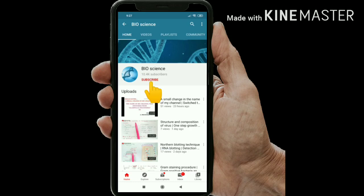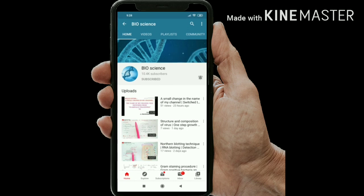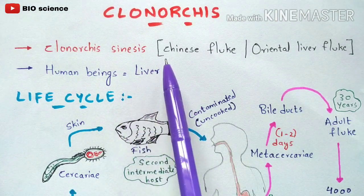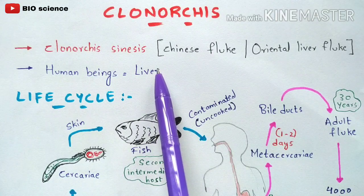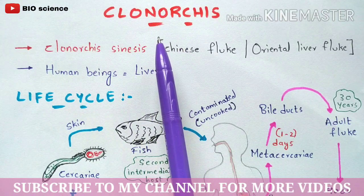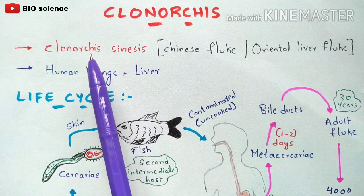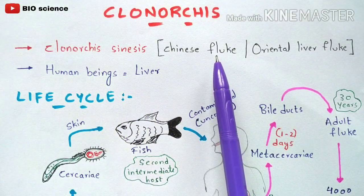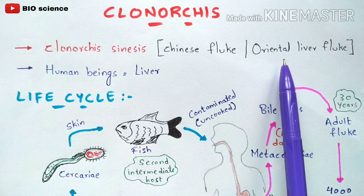Hello friends, if you like my videos subscribe to my channel and also press the bell icon for the latest updates. In this video we are going to discuss about Clonorchis — a parasitic disease. We will learn about Clonorchis, its cause, and the symptoms seen in an infected person. It is mainly caused by a fluke called Clonorchis sinensis, commonly known as Chinese liver fluke or Oriental liver fluke.